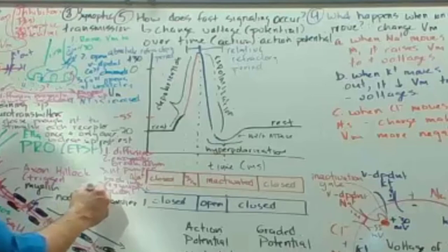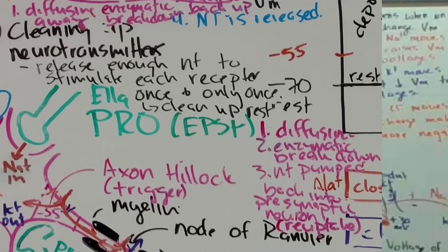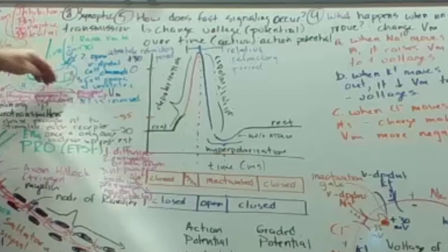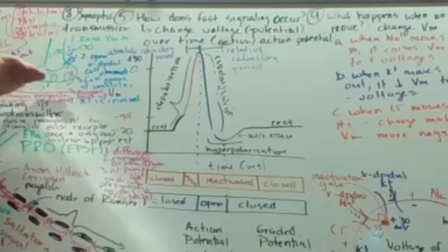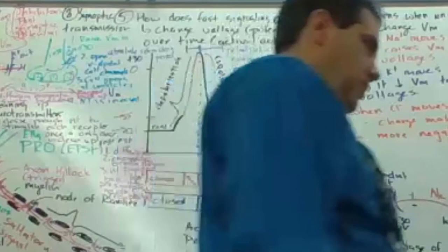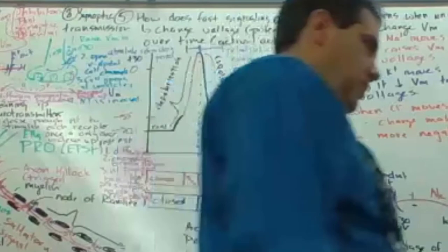SSRIs are antidepressants — at one time a third of everyone in the United States was on them. Serotonin is released into the cleft and normally pumped back up, but SSRIs inhibit that pump so serotonin sticks around longer and improves mood. It takes weeks to work, and there was speculation that some people got their energy back before their mood improved, which is dangerous for someone who is suicidal.